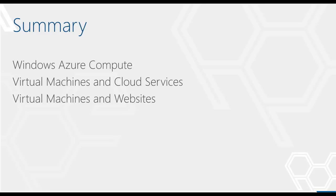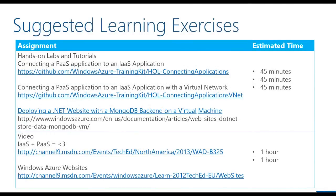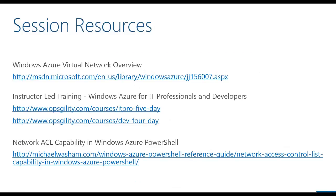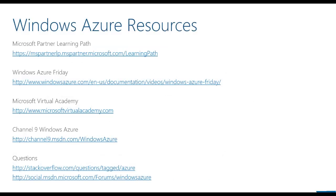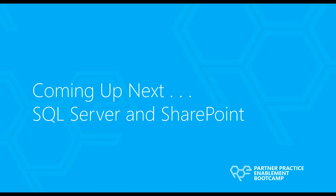In this session you learned more details about the compute models in Windows Azure — cloud services, websites, and mobile services. You learned how cloud services can be used to create highly scalable, stateless applications that integrate with applications and services on virtual machines in two ways: by connecting through a secure endpoint, and by connecting directly using a virtual network. You learned how Windows Azure websites can be used to easily deploy, manage, and scale web applications that integrate with applications and services on a virtual machine using secure endpoints like cloud services. You also saw how to enable autoscale to have applications hosted on Windows Azure websites automatically scale up or down to meet demand and save money by not paying for instances you're not using. Coming up next, we'll talk about SQL Server and SharePoint, learning best practices for management and deployment of these two critical workloads in Windows Azure. Thank you for watching this session.